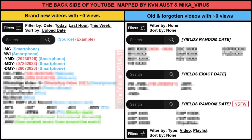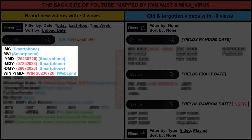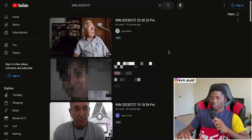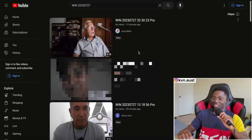My favorite: these videos are all recorded using webcams. The key phrase is 'win' followed by year, month, and day. I've been finding a lot of weird stuff on 'win' — we're just going to take a look around.